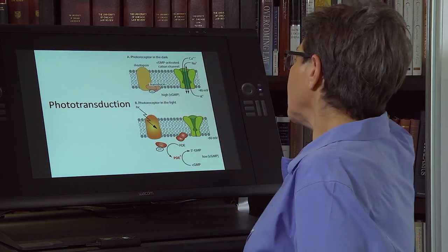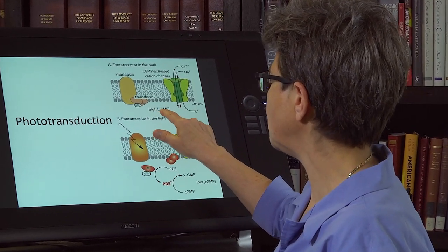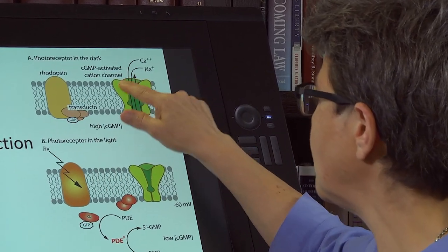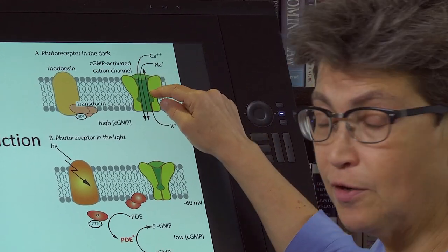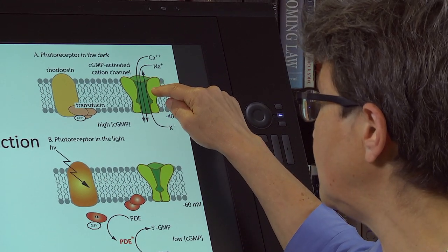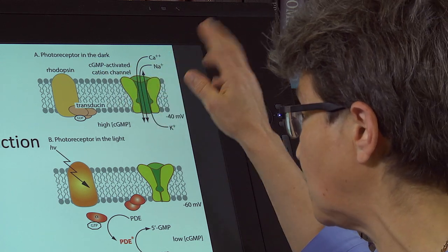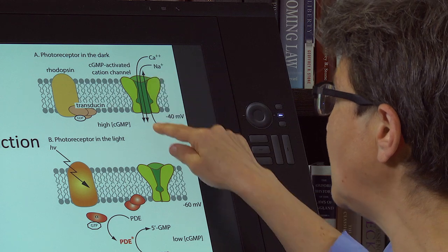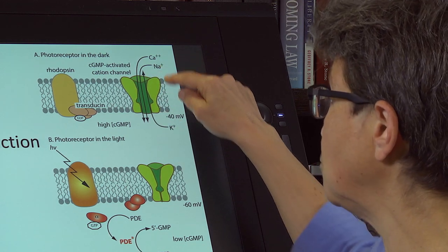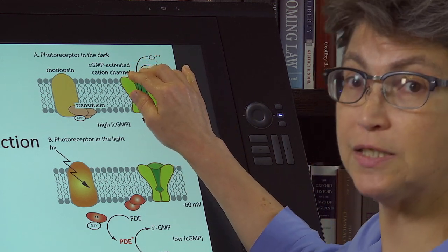At rest, there is a high concentration in the photoreceptor of cyclic GMP. There are specific metabotropic channels in the photoreceptors, cyclic GMP activated cation channels. These are non-selective cation channels that pass sodium and potassium, but they also pass calcium, so they're going to depolarize the cell.